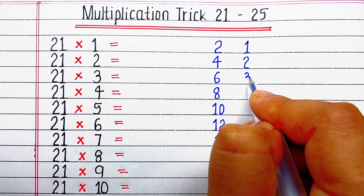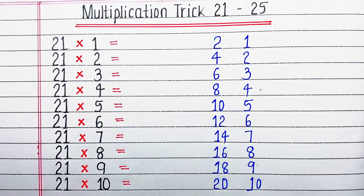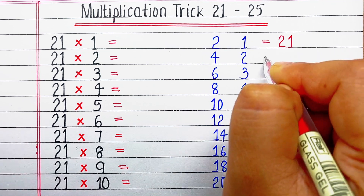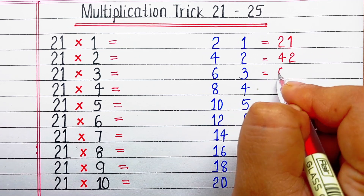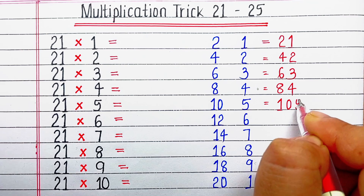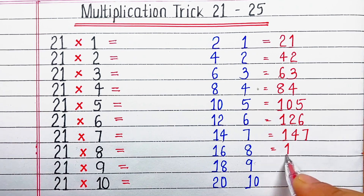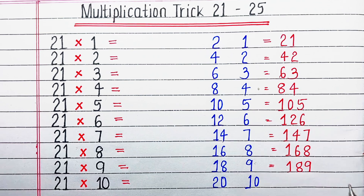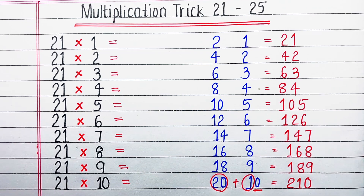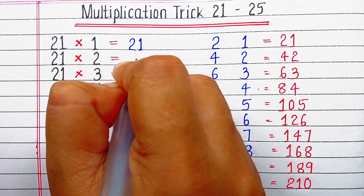Next we will write the table of 1 to the right. Now we will combine both the numbers: 2 and 1 makes 21, then 4 and 2 makes 42, next 6 and 3 makes 63, then 8 and 4 makes 84, then 10 and 5 makes 105, then 12 and 6 makes 126, 14 and 7 makes 147, 16 and 8 makes 168, 18 and 9 makes 189. For 20 and 10, we make 20 plus 1 equals 21 and put a 0 at the end. With this we have got the table of 21.